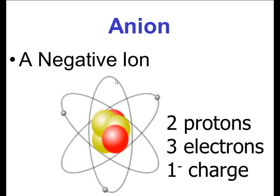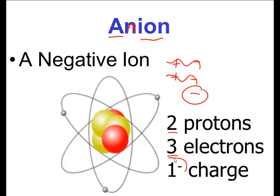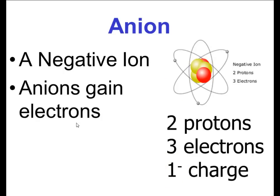An anion is a negative ion. How do I know that? An anion ends in a negative ion. A good example of a negative ion is where I have two protons — let's draw them as two pluses — and three electrons. Let's draw three negative electrons. These guys cancel, these guys cancel, and I'm left with a negative charge left over. I got a one minus charge. Anions gain electrons. When you gain electrons, you outnumber the protons, and you end up with a negative ion or negative electron left over that's not canceled out, giving you a negative charge.